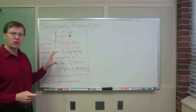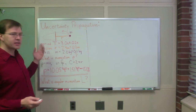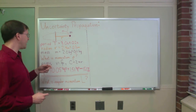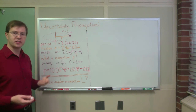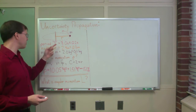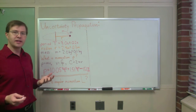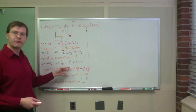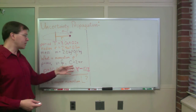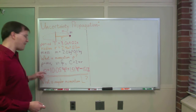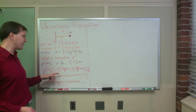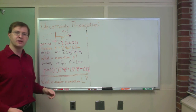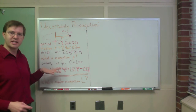I want to start by reviewing my previous example. I had a mass circling around a fixed axis attached to a rigid rod, and I had figured out the magnitude of its linear momentum. I had measurements for the period, the radius, and the mass. Linear momentum is mv, and v is circumference over time — circumference is 2πr. I propagated through the uncertainty and found my linear momentum was 10.05 kg·m/s plus or minus 1.51 kg·m/s, that's 15.0%. I've kept an extra digit throughout because these are intermediate steps.